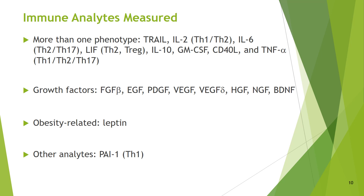Another analyte, specifically a hormone, which was collected and is of particular relevance for the cohort in question, is leptin. Leptin is produced by fat cells in the body, and its main role is to regulate fat storage, so it is involved in energy balance.